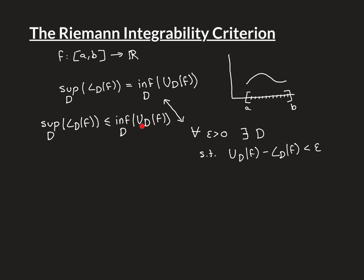Similarly, the set of all upper Riemann sums is bounded below by any one of the lower Riemann sums, because they're always less than or equal to every upper Riemann sum. So again, because we're in the real line, it will have a greatest lower bound — the infimum will exist. So these things are always going to exist.